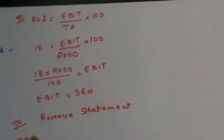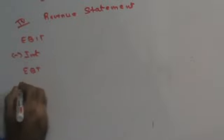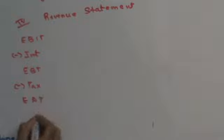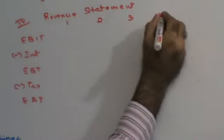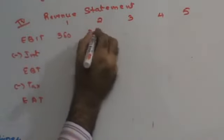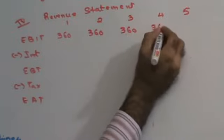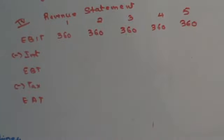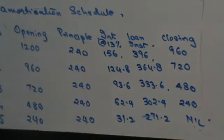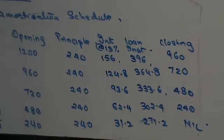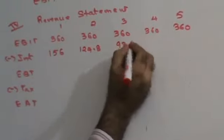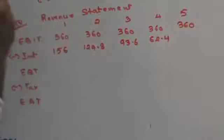The revenue statement format is: EBIT less interest gives EBT, less tax gives EAT. EBIT is 360 for all 5 years. Interest is taken from the loan amortization schedule: Year 1 = 156, Year 2 = 124.8, Year 3 = 93.6, Year 4 = 62.4, Year 5 = 31.2.